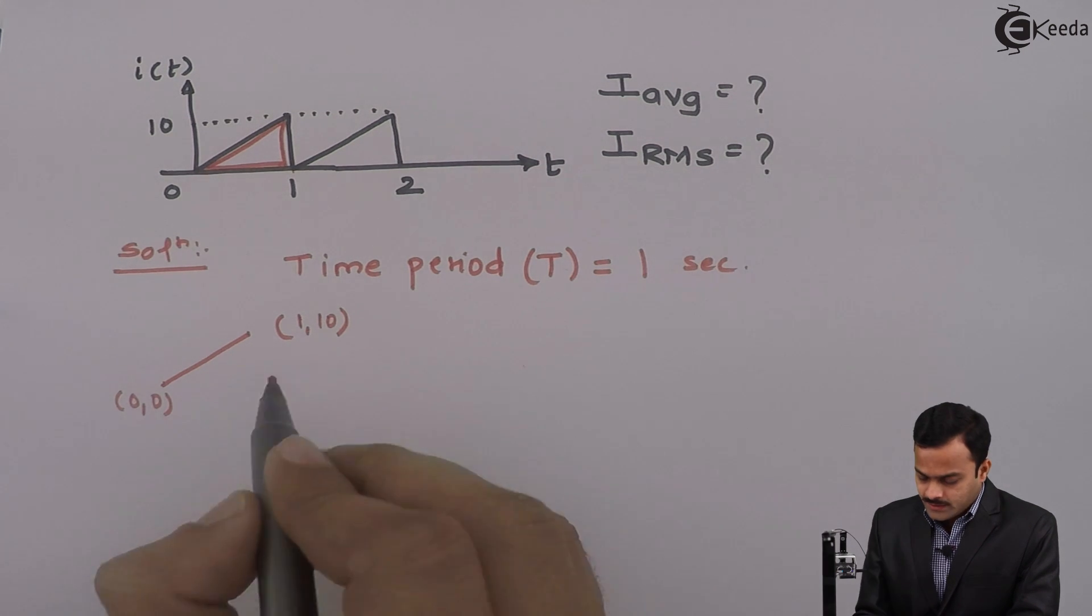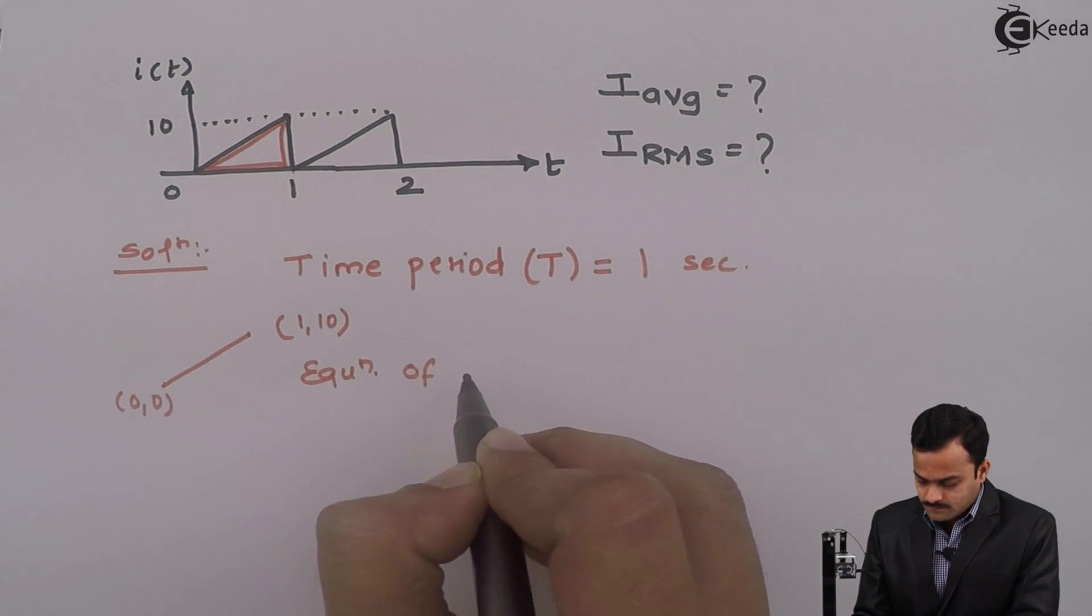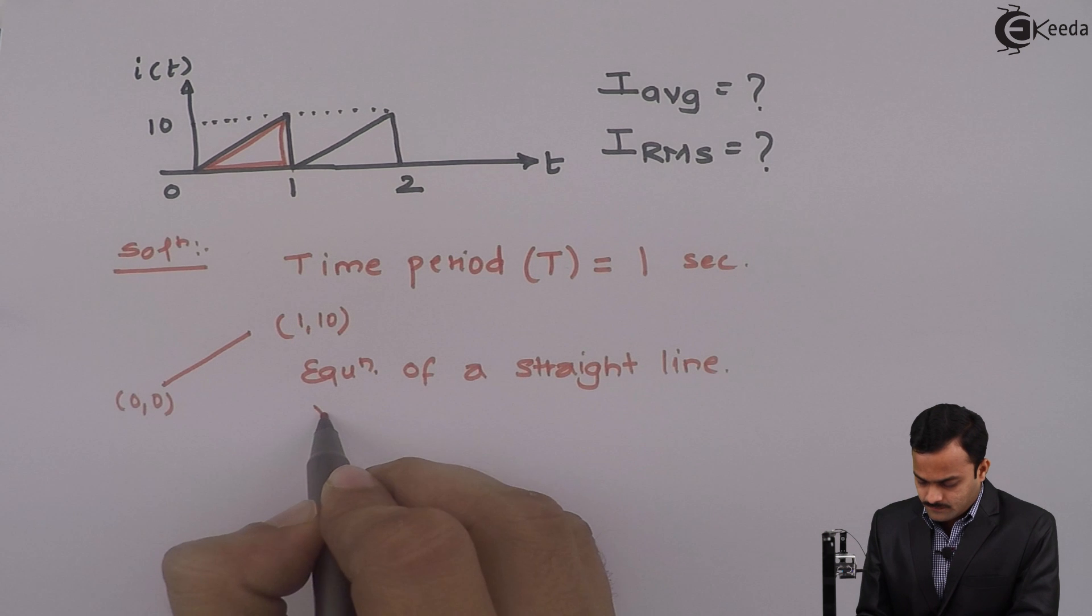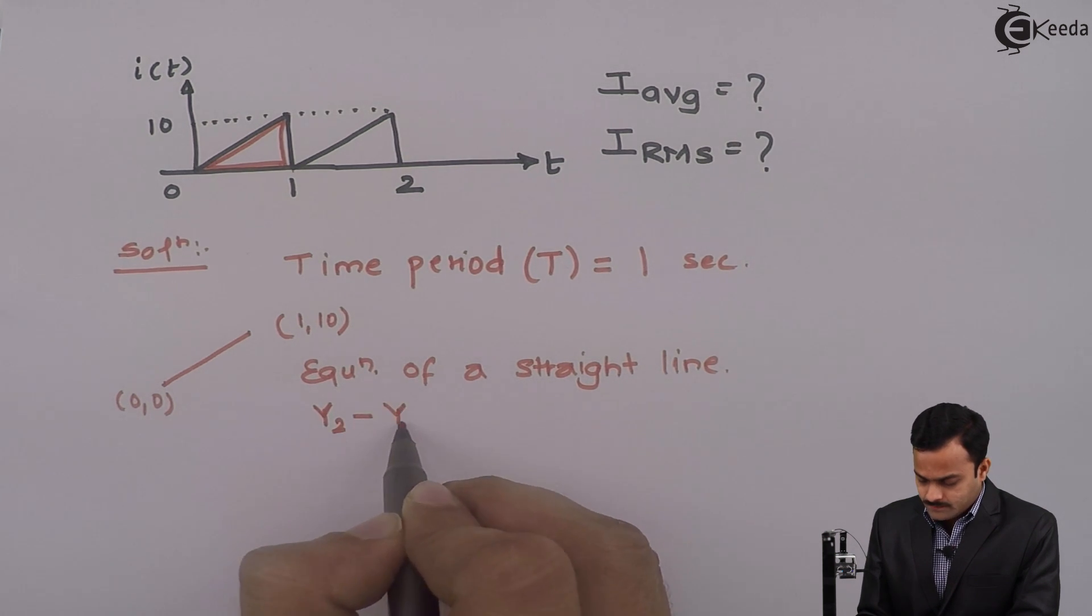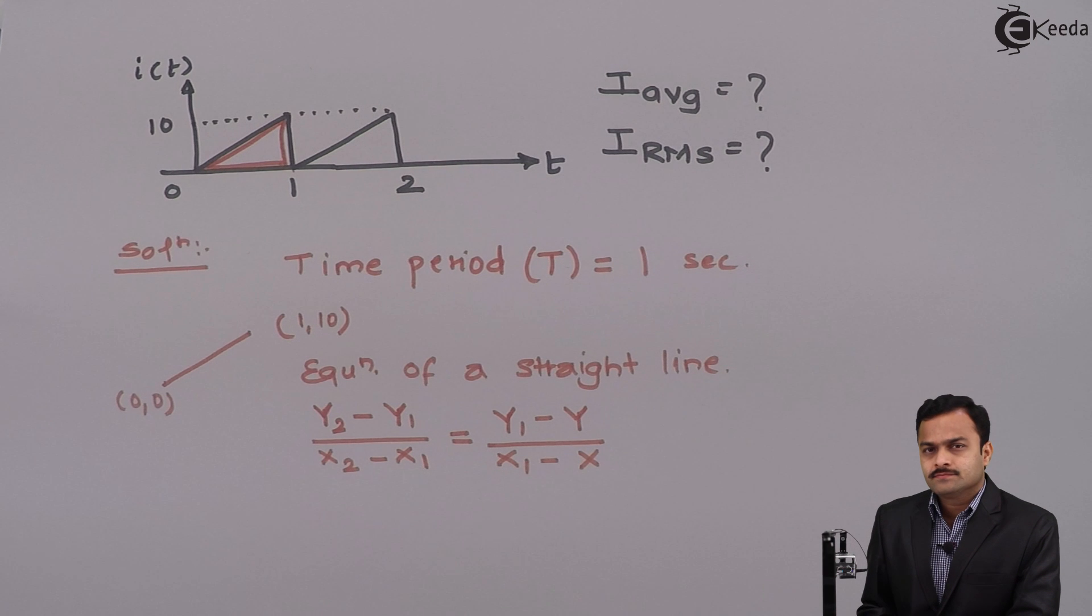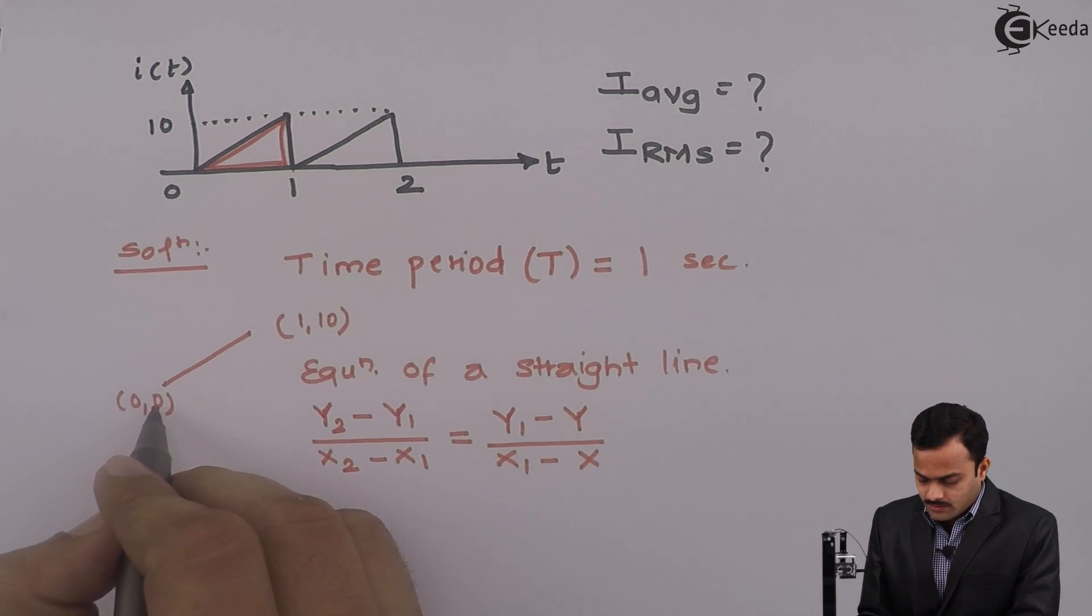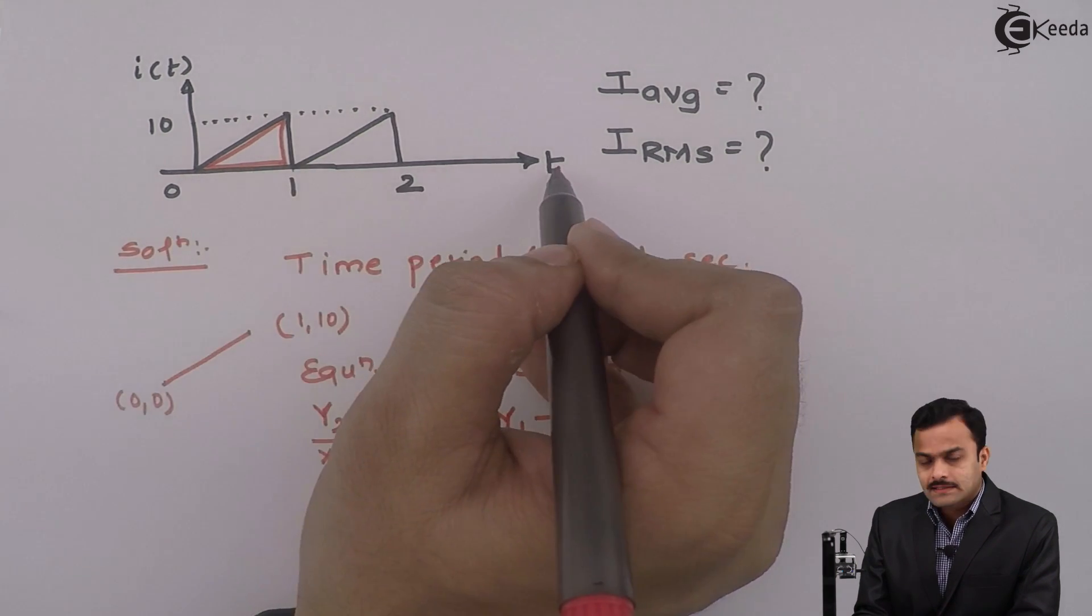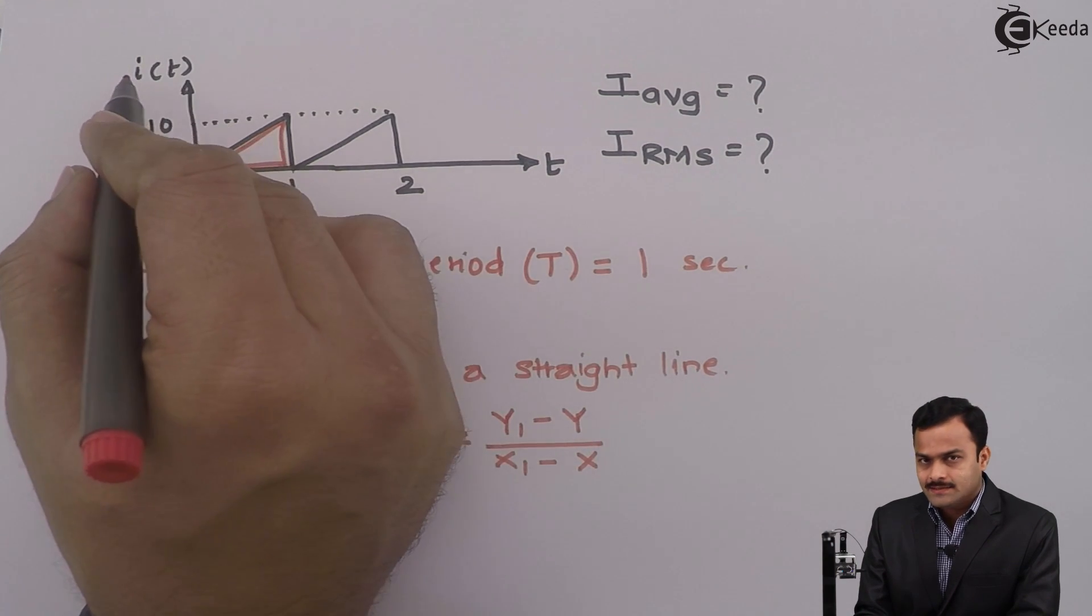I can use equation of a straight line. It says (y2 - y1)/(x2 - x1) = (y1 - y)/(x1 - x). Here, I will consider this as x1, y1, x2, y2 and x axis is t, y axis is i(t).